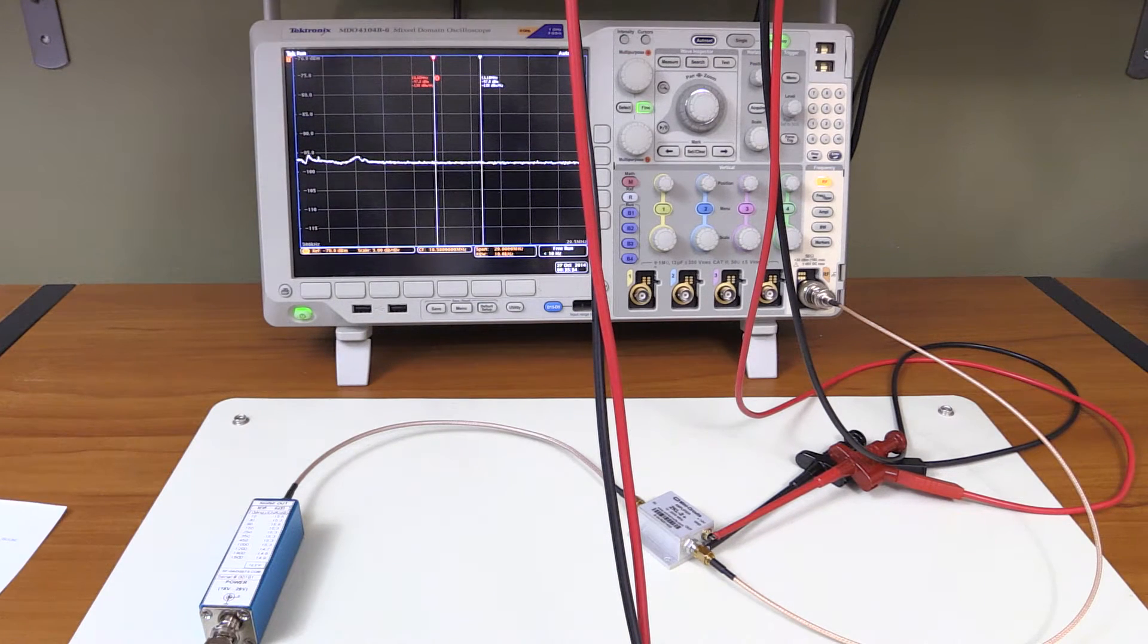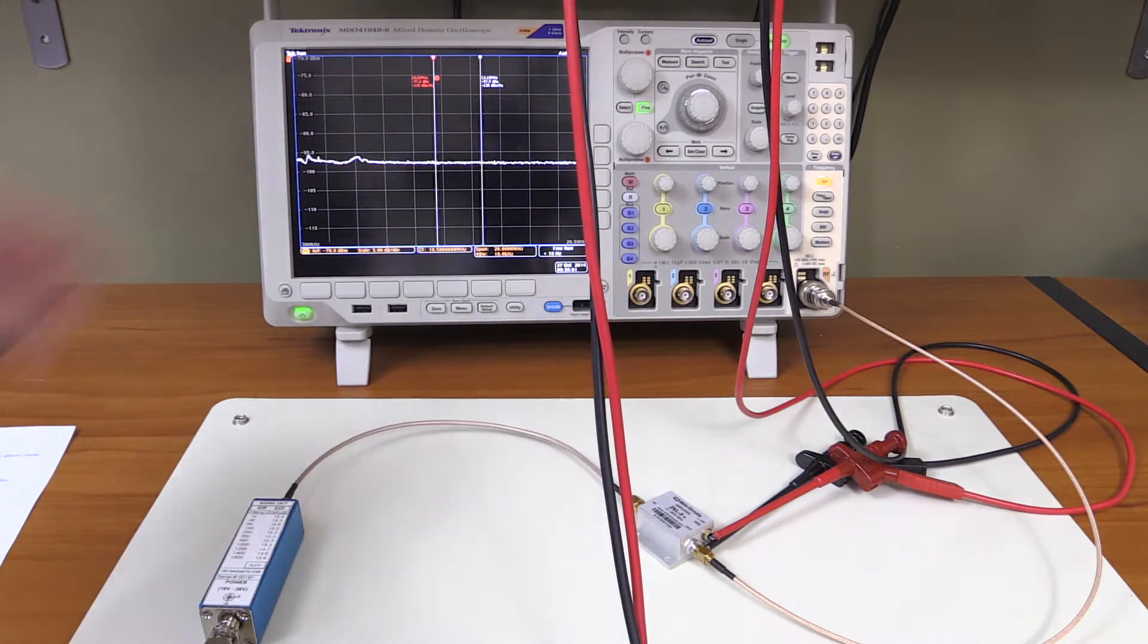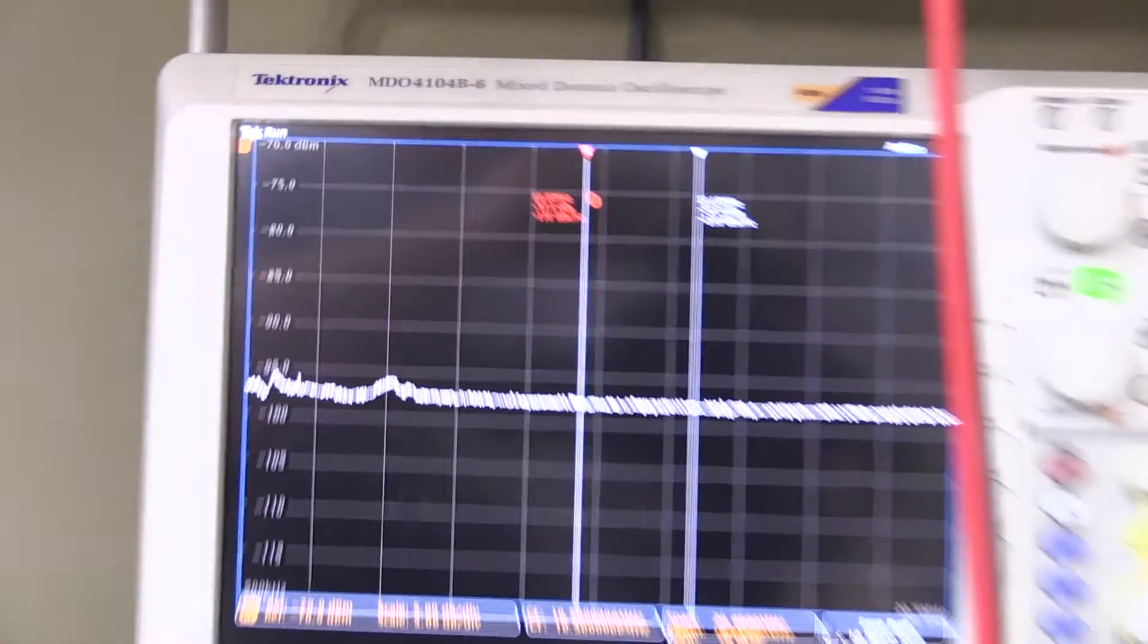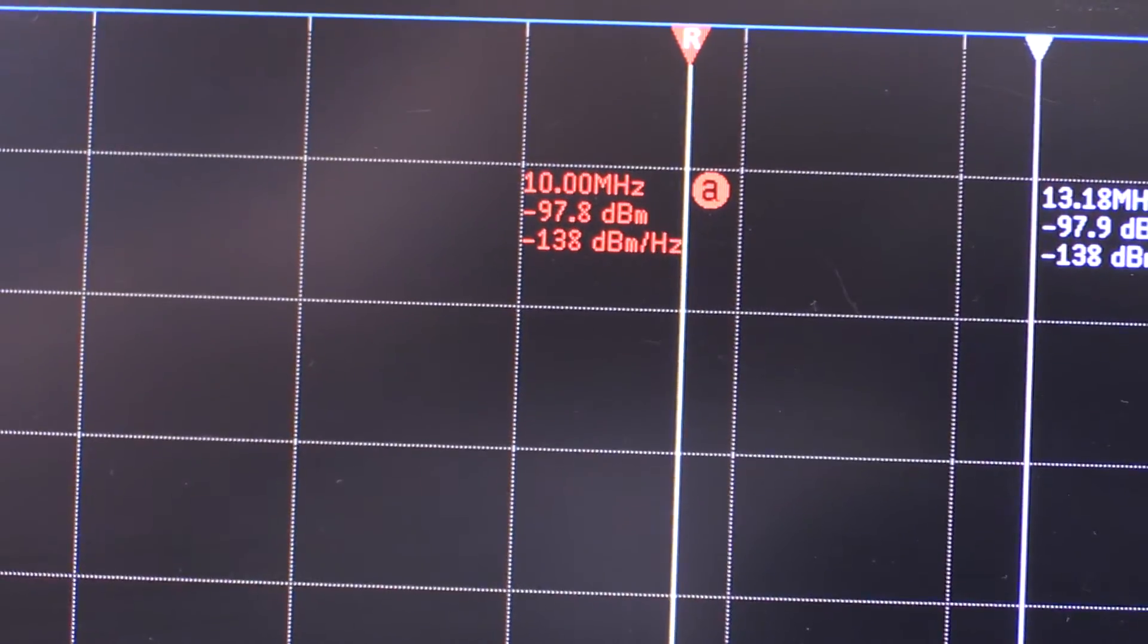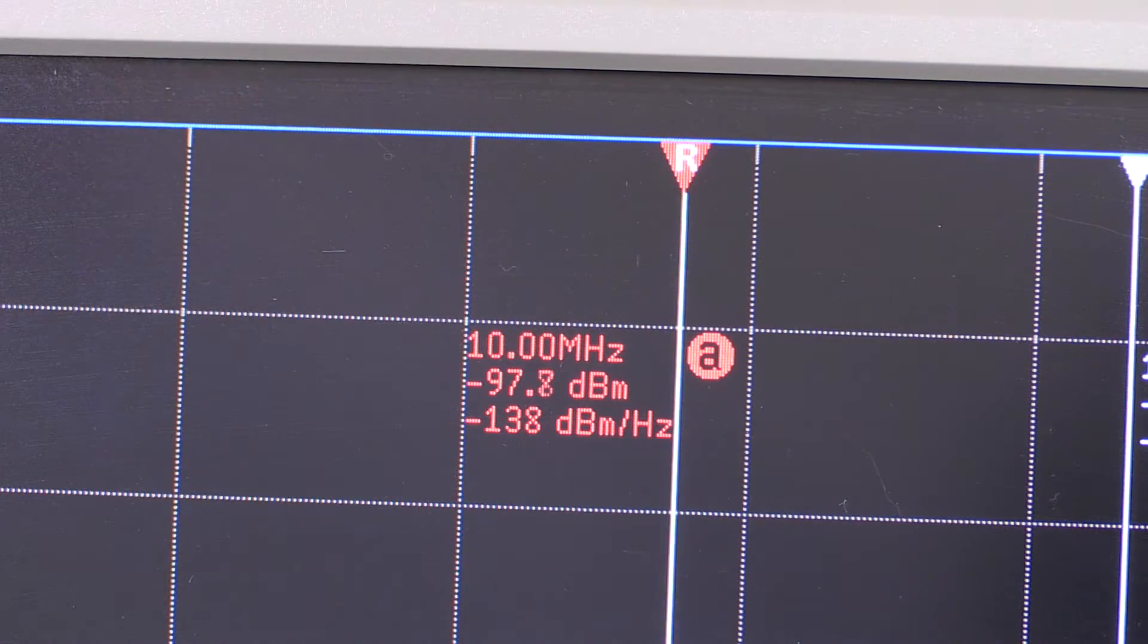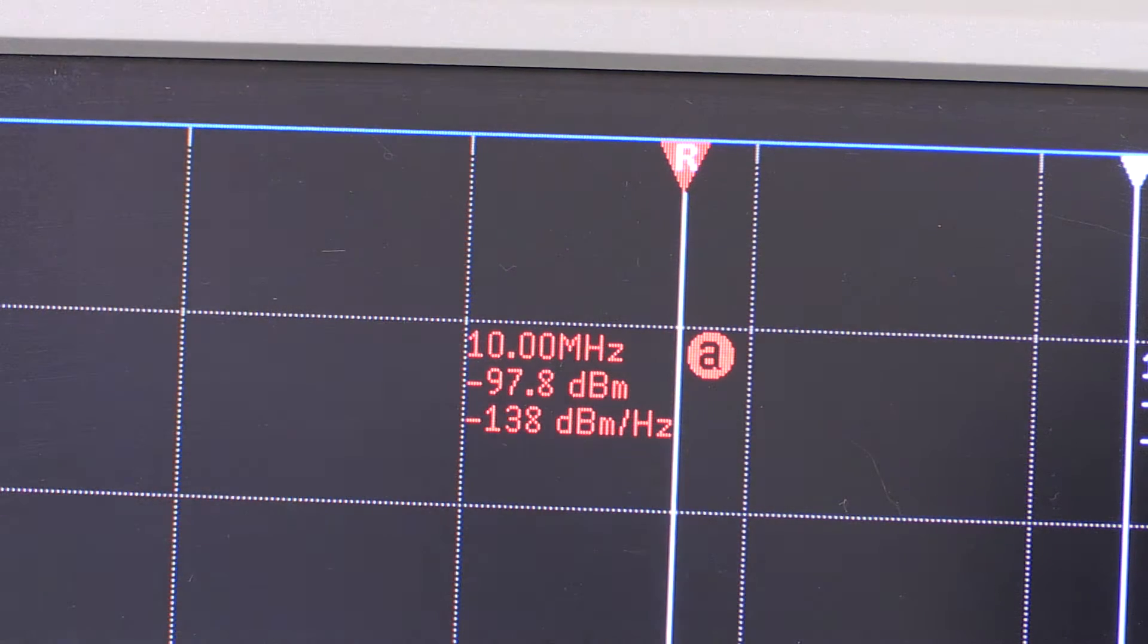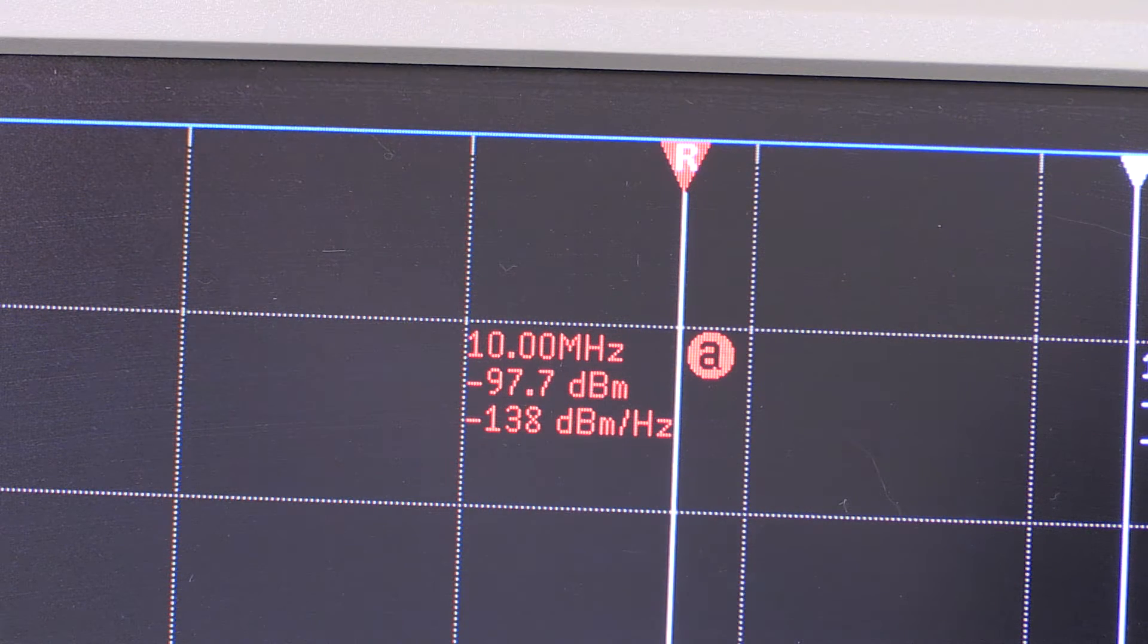That's the entire test setup—you don't need anything more than that. A calculator is definitely handy. The first thing we're measuring right now is the output power level with the noise source turned off. We're going to try to determine the noise figure at 10 megahertz.